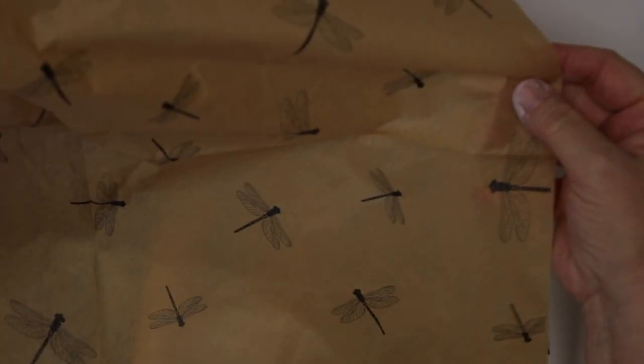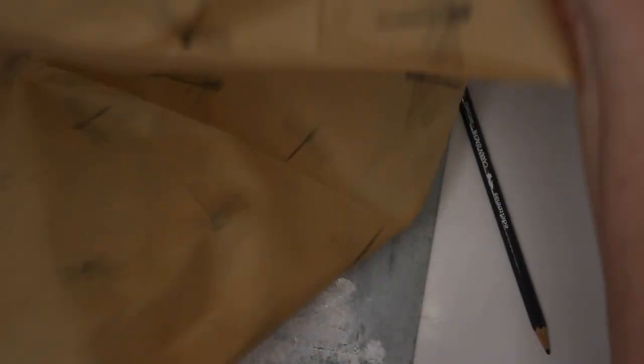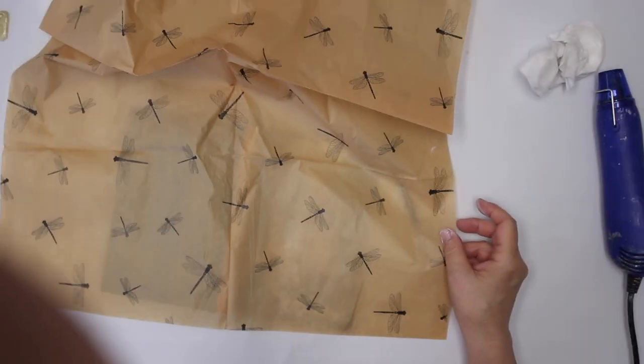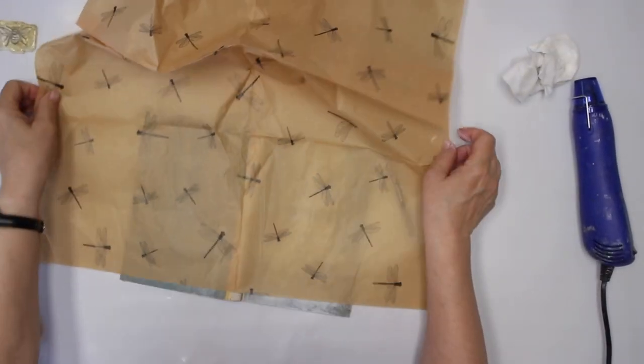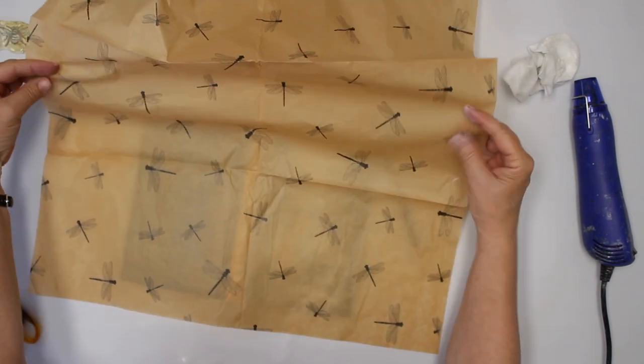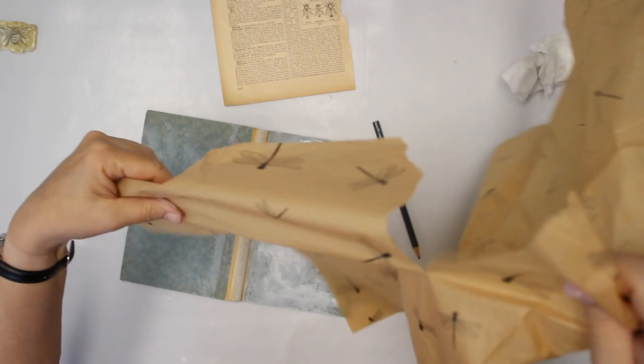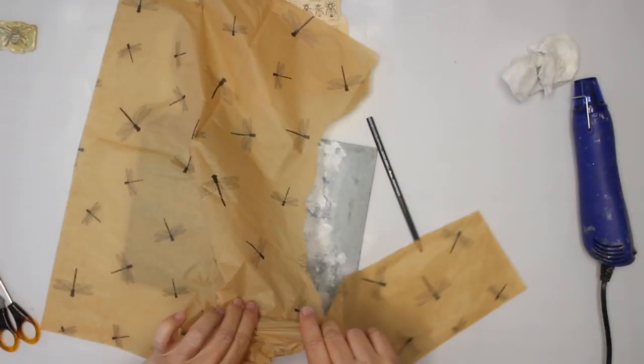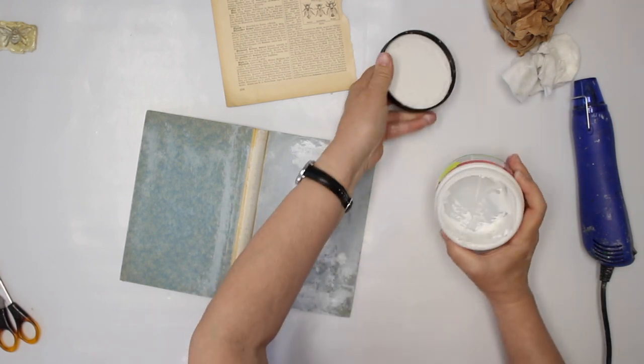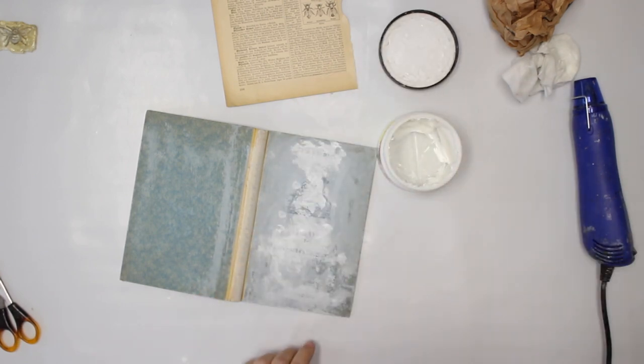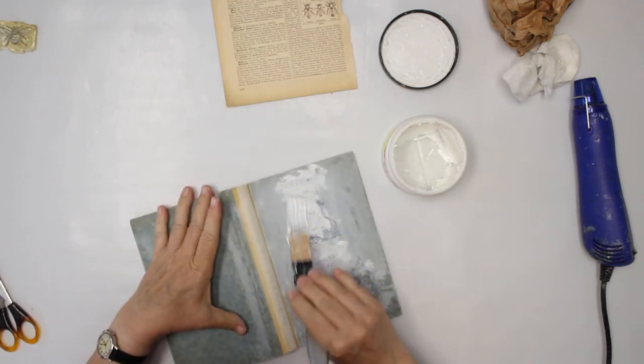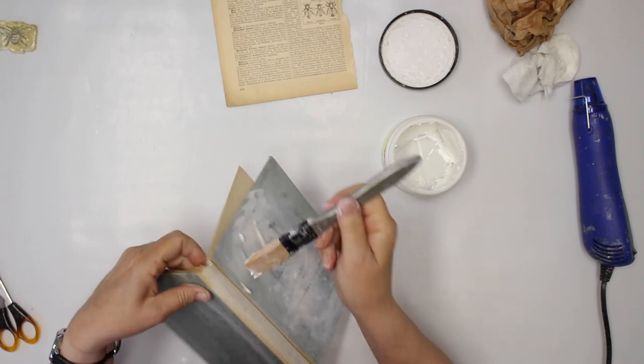Now to crinkle or not to crinkle? That's the question. Okay, I have to zoom you out again. Sorry guys. I think I'm going to crinkle it a bit. Running low on matte medium. I'm going to use the matte medium to apply the tissue paper.